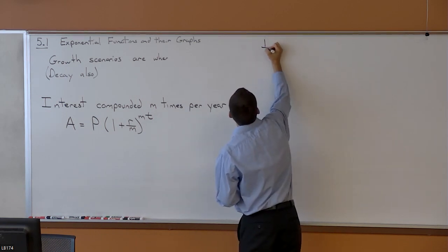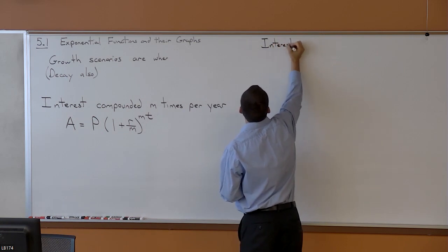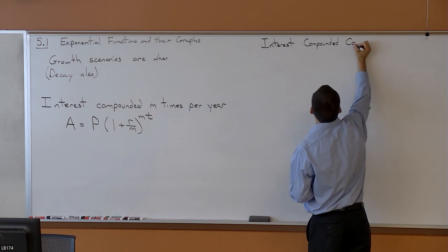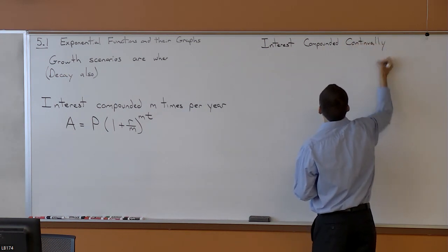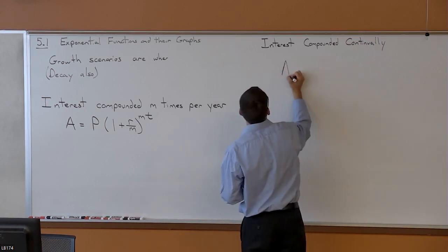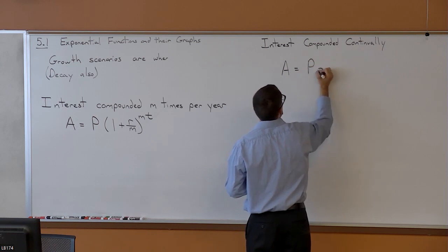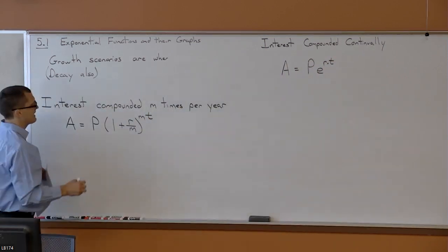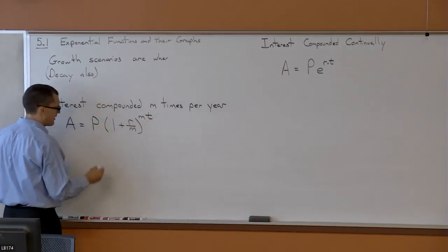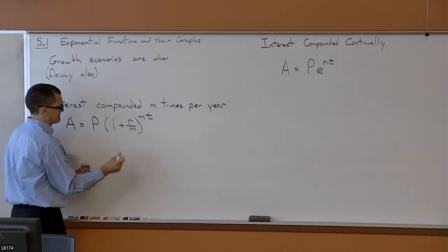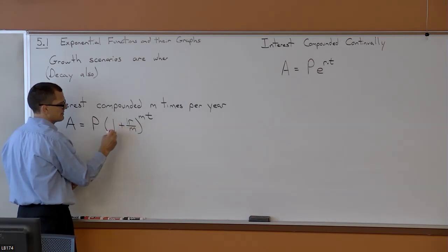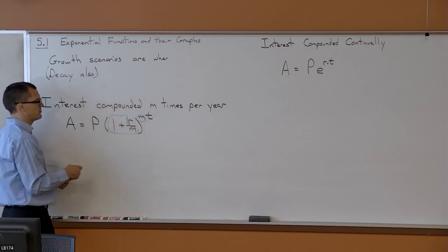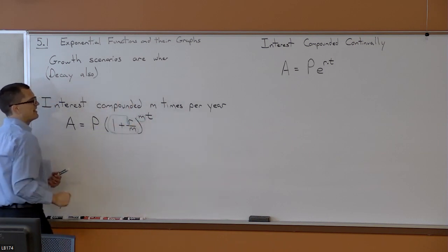So, when we have interest compounded continually, our formula is going to be A equals P times E, and then in the exponent, R times T. Basically, what happens is the one plus one over M, this part of the formula to the M power, that gets changed to an E. And then the R times the T gets left to remain.